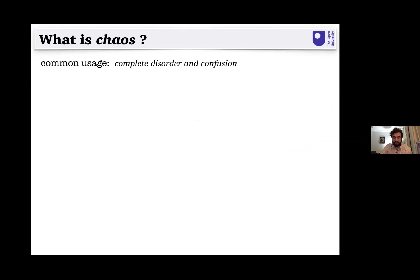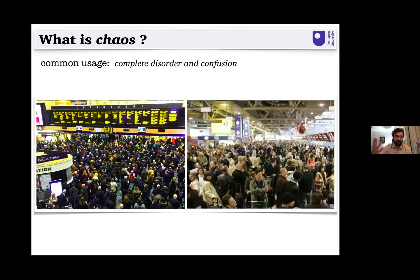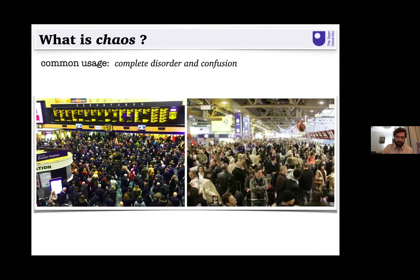For example, if I show you images of very messy and disordered rooms — a storage room or an office — one of the words that comes to mind to describe this is usually chaotic. Other classical examples where you see the word chaos used, particularly in news headlines, is when there are problems at train stations or airports, where delays cause accumulation of people. We think of these as chaotic scenes.